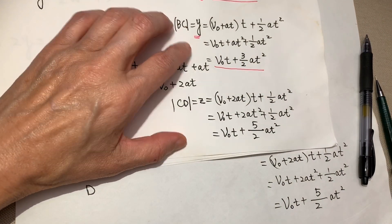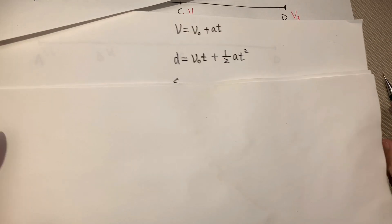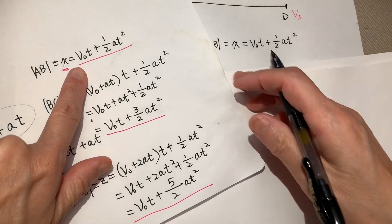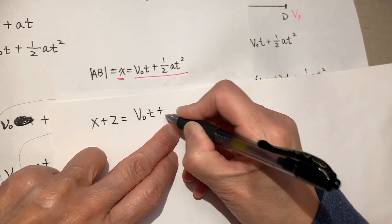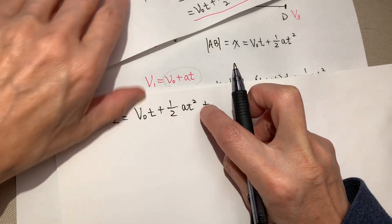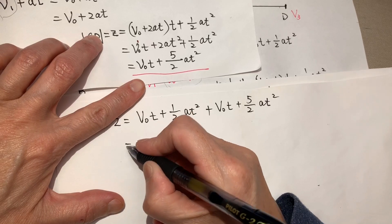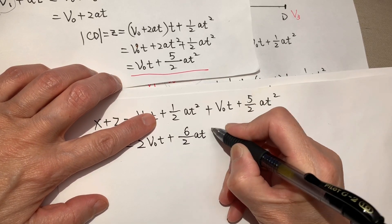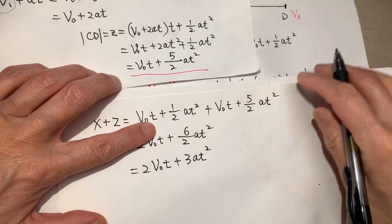Okay, so up to now we can see actually quite clear. Now we just need to do some mathematical compilation. So X plus Z equals to what? X is V0T plus half AT square plus Z, Z is V0T plus 5 over 2 AT square. Combine the like items, 2V0T plus 3AT square.